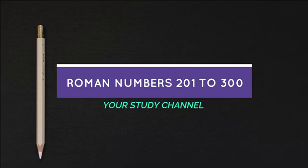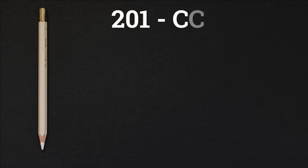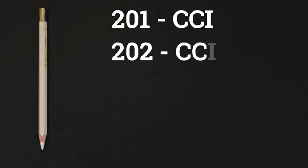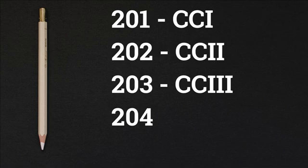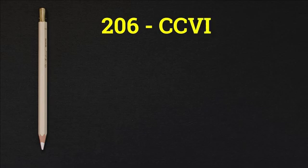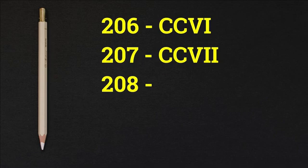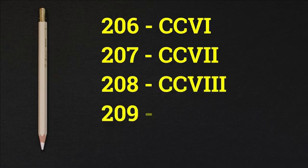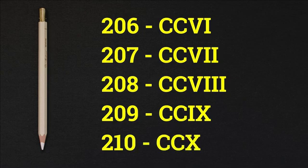Hello everyone, today we will learn Roman numbers from 201 to 300. So let's begin. 201 - CCI, 202 - CCII, 203 - CCIII, 204 - CCIV, 205 - CCV, 206 - CCVI, 207 - CCVII, 208 - CCVIII, 209 - CCIX, 210 - CCX.